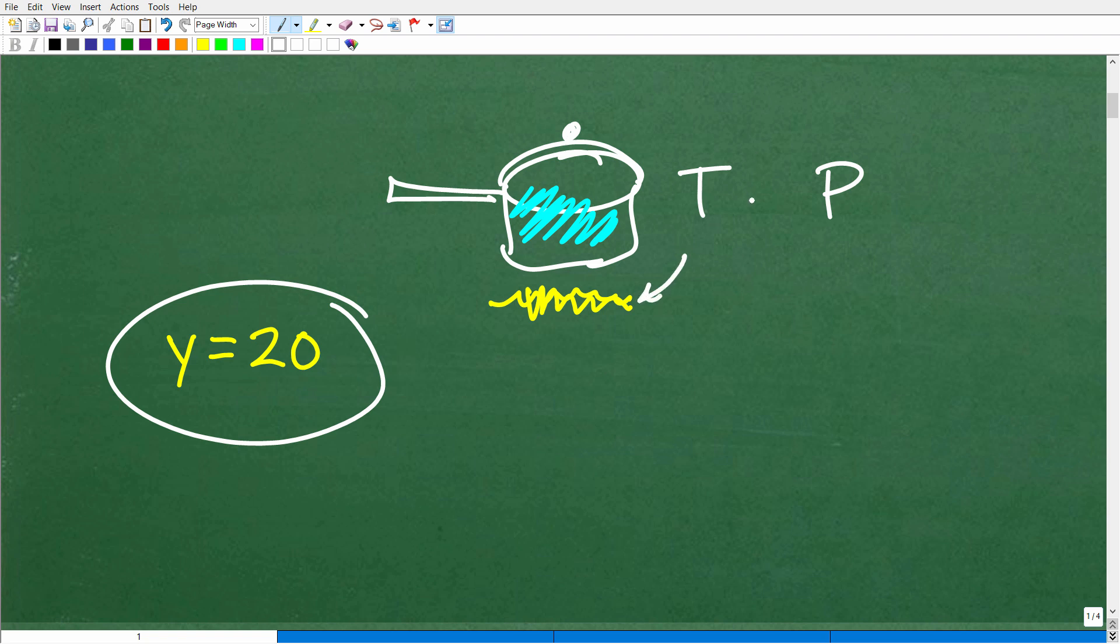All right, so this is an example of direct variation. So here we have temperature. Here we have pressure. I'm going to turn this into a science class, but you'll get the idea. All right, so as the temperature goes up, as we increase the temperature, what do you think is going to happen to the pressure inside of this pot with the lid on it? Well, if your answer is, well, Mr. U2 Math Man, isn't the pressure going to go up as well? You would be correct.